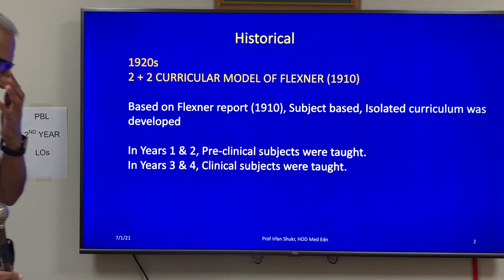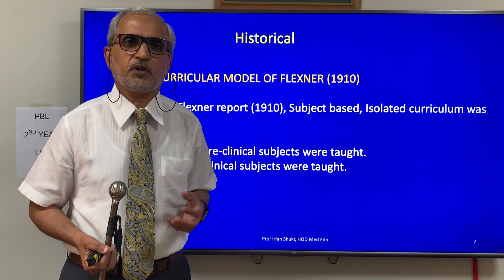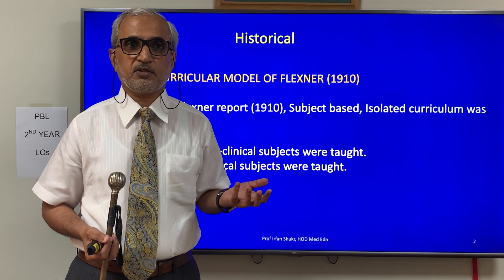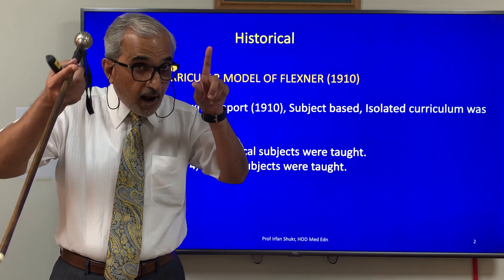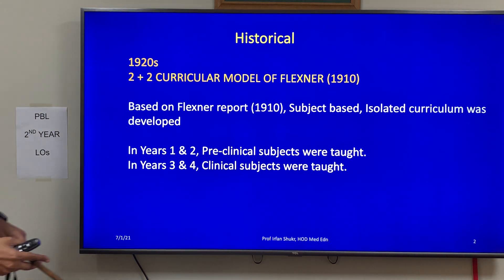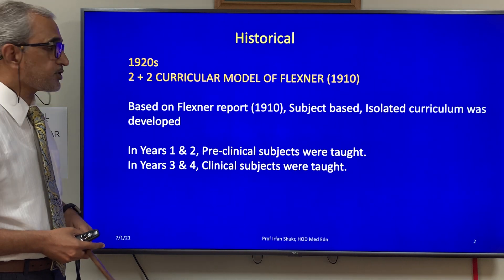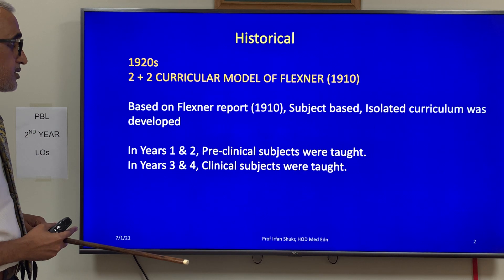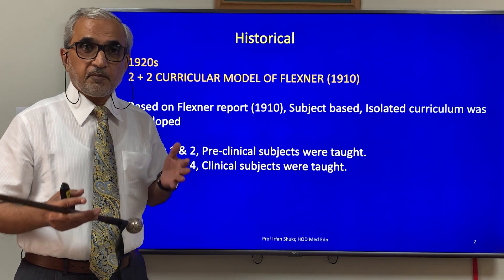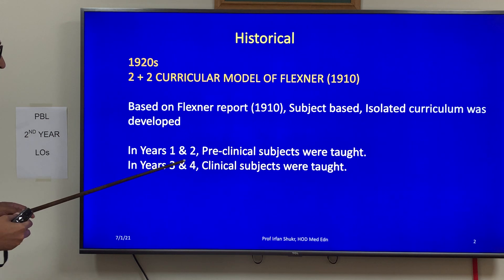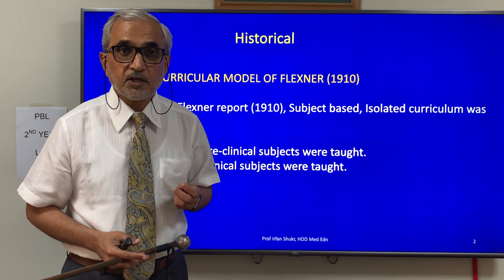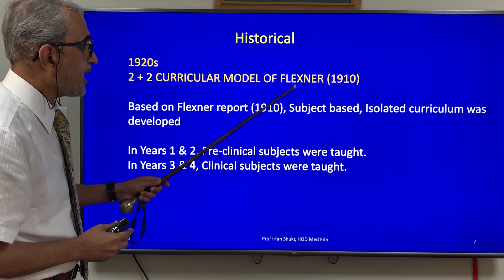Historically speaking, before 1920, different schools were teaching medicine with two-year, one-year, or 18-month courses. That continued until Abraham Flexner gave his report around 1910, on the basis of which a two-plus-two curricular model came into existence. The curriculum became four years in duration — first two years for pre-clinical subjects and the last two years for clinical subjects. Each subject got its own identity: it was a subject-based, isolated curriculum.